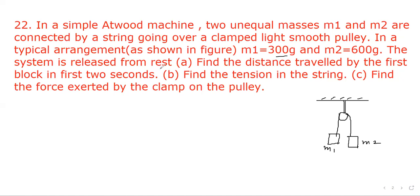The system is released from rest. Find the distance traveled by the first block in first two seconds. Find the tension in the string and find the force exerted by the clamp on the pulley. So M1 is given as 0.3 kg.